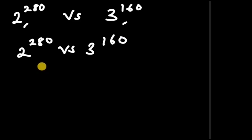To find which value is greater using this trick, let's express these exponents in terms that have a common number. Here's what I mean: 280 is actually 7 times 40, so we can express this as 2 to the power of 7 times 40.